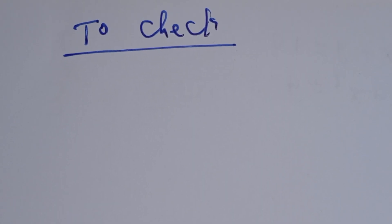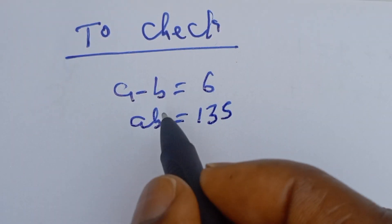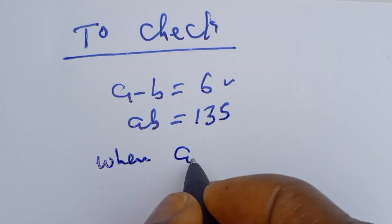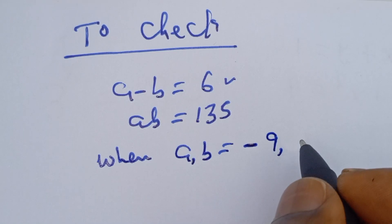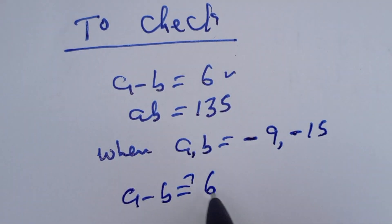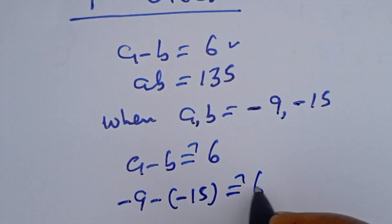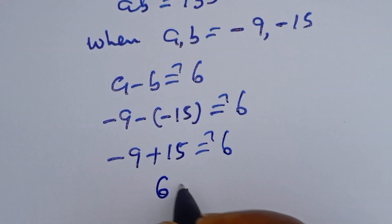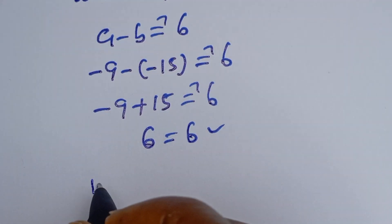We can check to confirm if these answers are right. Let's check using the given equations: A minus B is equal to 6, and AB is equal to 135. When (A, B) is equal to (minus 9, minus 15), then A minus B must equal 6: minus 9 minus minus 15 must be equal to 6, then minus 9 plus 15 is equal to 6, which is true.